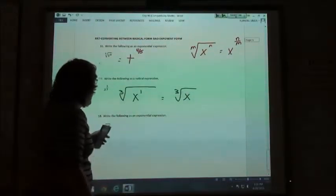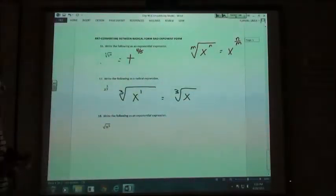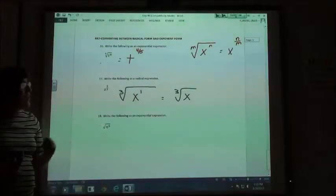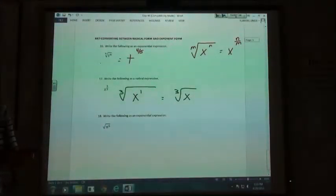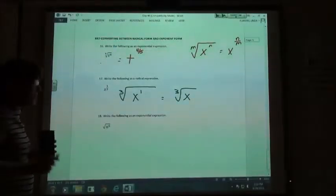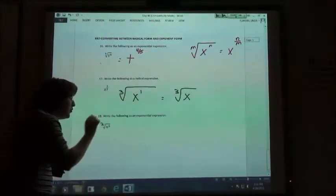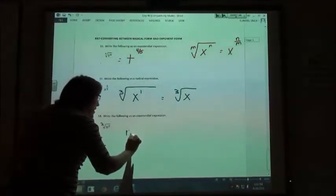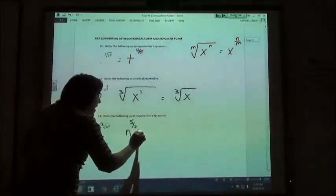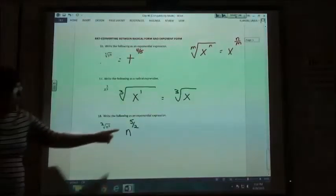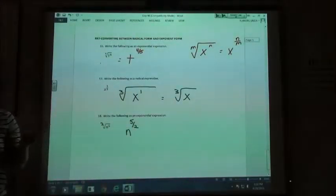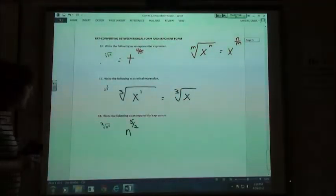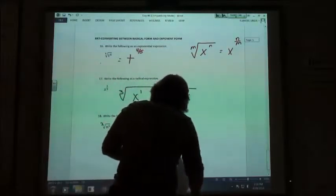Number 18, write it in exponential form again. Now in this case, there's not a number written in there. We know that if there's not a number written in there, that's a square root and that the index is understood to be a 2. So this would be n to the 5 halfs power, right? If my denominator is 2, it's a square root and on square roots, we don't need the 2 written in there because we understand it's a 2 instead of having to write it in.